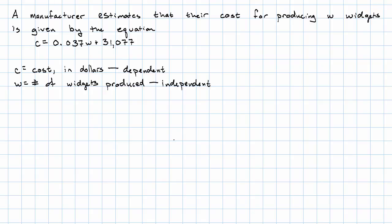How do we interpret the numbers in this equation? The intercept is the starting value. It's the value of c when w is 0. So it sounds like their costs are $31,077, even if they don't produce any widgets. We usually refer to these as flat costs or upfront costs.